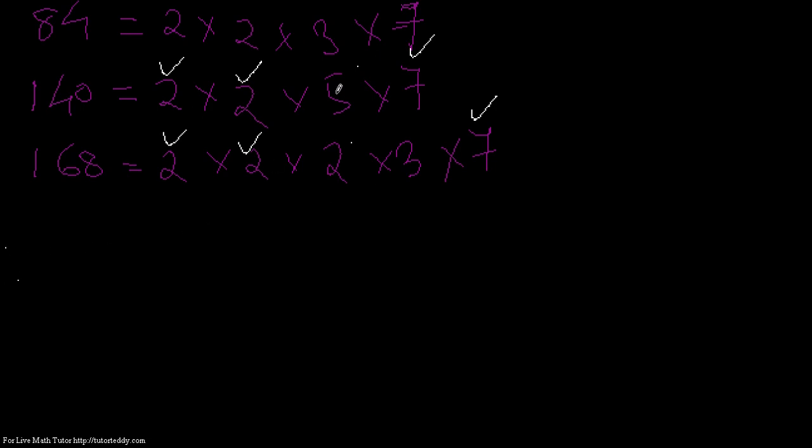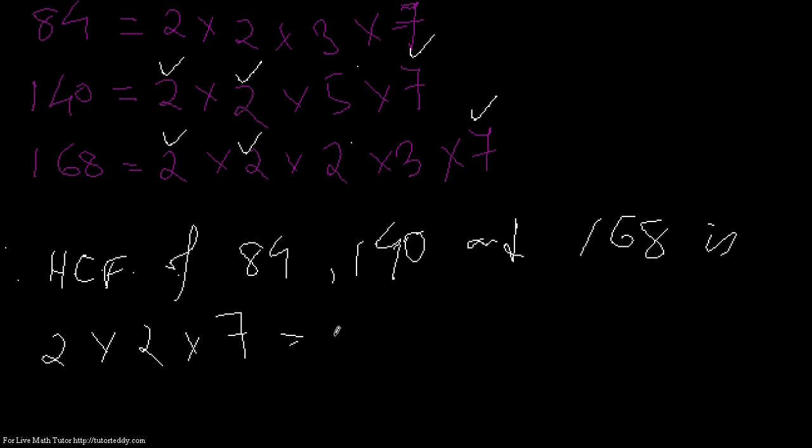And to find the highest common factor, I have to multiply three of them, two into two into seven. That means two times four, four sevens are twenty-eight. That will be my HCF, highest common factor. Therefore, I can write HCF, which was asked actually, HCF of eighty-four, one forty and one sixty-eight is two into two into seven. That is twenty-eight.